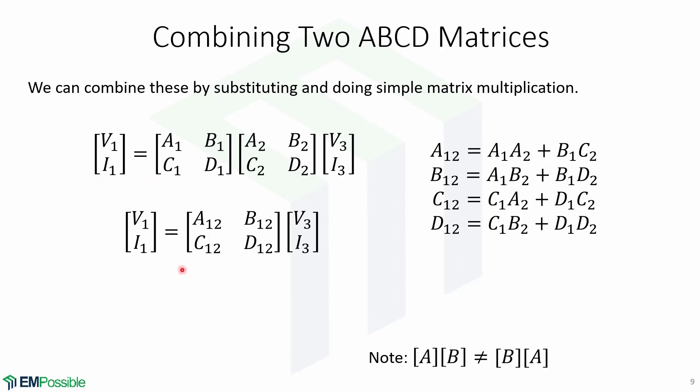Here are the combined two ABCD matrices. When we multiply, we get a new ABCD matrix where each of the elements are shown here. This is just simple matrix multiplication. Also note that matrix A times matrix B is not equal to matrix B times matrix A.